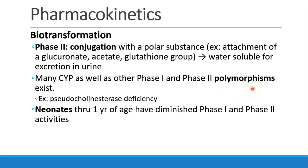There are a lot of different polymorphisms — genetic variabilities in patients — in their cytochrome P450 systems and other chemical processes. One example is pseudocholinesterase deficiency: patients who can't metabolize succinylcholine. We can see many different patients who may not respond normally to a specific drug or class of drugs because of an inherited polymorphism. Also, babies — specifically neonates up through about one year of age — have diminished phase 1 and phase 2 activities, so we may need to adjust dosing based not just on weight and body fat, but also on their limited metabolic capabilities.